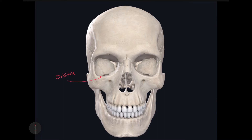Just to review, the maxillofrontale is located right here. Returning to the inferior margin of the bony orbit, if we find the zygomaxillary suture — this suture right here — where this suture meets the inferior margin of the bony orbit, that craniometric point is called the zygoorbitale.